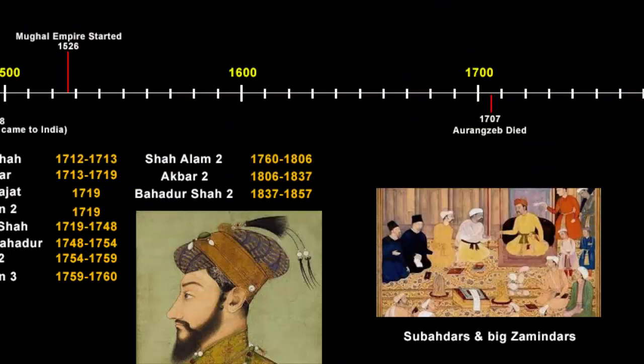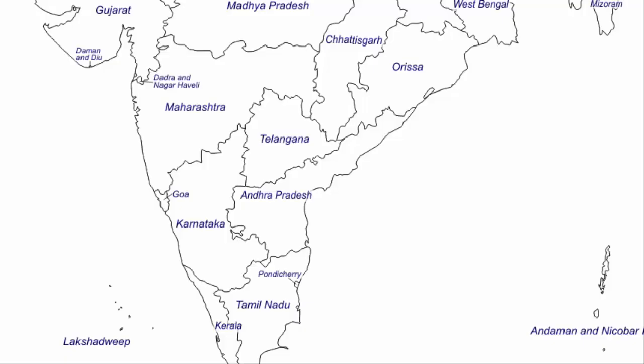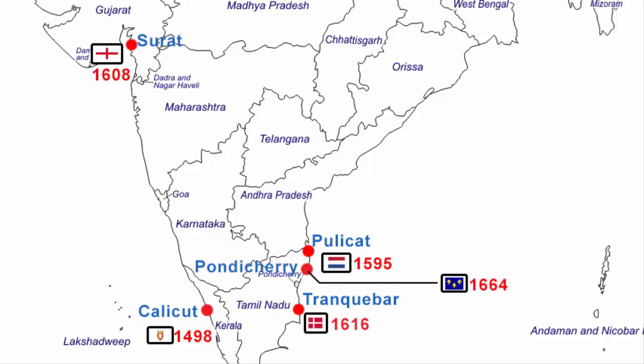We have the dates 1707 and 1498. In 1498, the Portuguese came to India and landed at Calicut. After the Portuguese, the Dutch fleet arrived in Pulicat in 1595. Then came the British, who landed in Surat in 1608. After them, the Danish came to Tranquebar in Tamil Nadu in 1616. And at last, the French came to Pondicherry in 1664. They were all collectively called European traders.